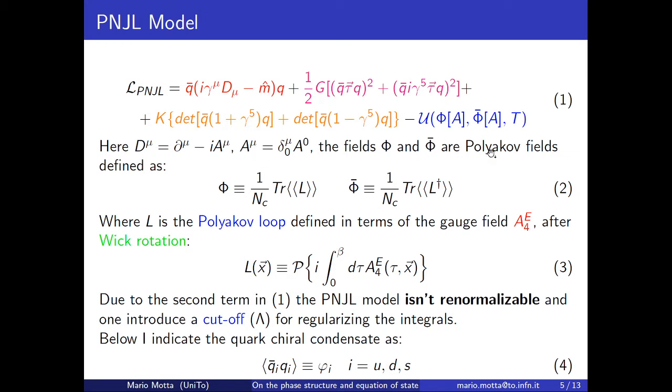Phi and phi-bar are the Polyakov fields, defined in this way, and L is the Polyakov loop, defined in terms of the gauge field A4, the Wick rotation of A0 in the Euclidean space.